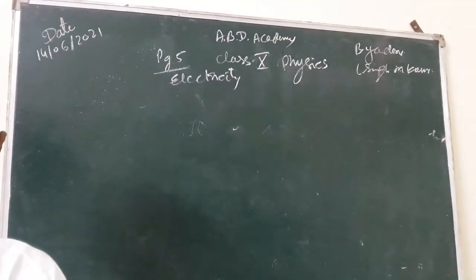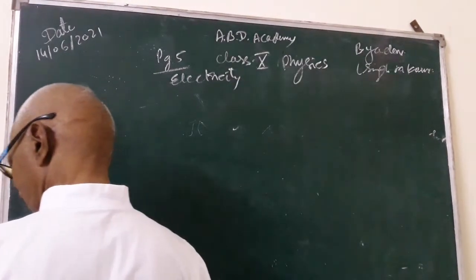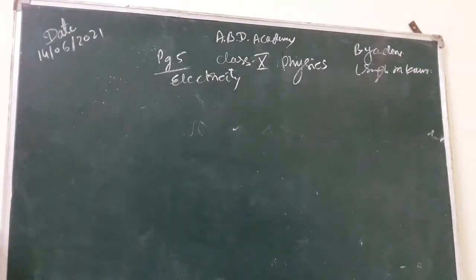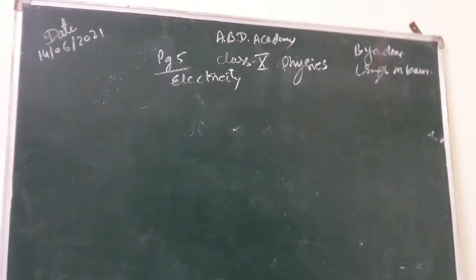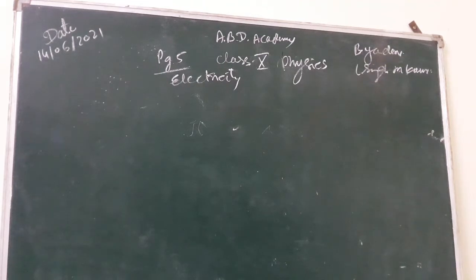Now students define one Coulomb charge. One Coulomb charge is that charge in bringing of which one Joule work is done in an electric field with potential of one volt. Anyway you can define this. One Coulomb is equal to one Joule upon one volt.